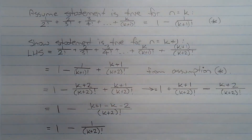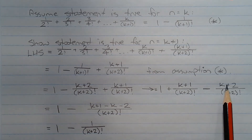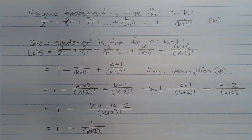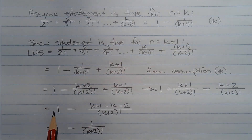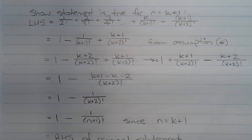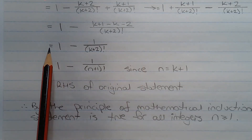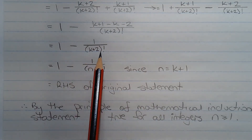Swapping these two terms around, that equals 1 plus k plus 1 over k plus 2 factorial minus k plus 2 over k plus 2 factorial. Adding the numerators together since we have a common denominator, that equals 1 minus k plus 1 minus k plus 2 over k plus 2 factorial. And that equals 1 minus 1 over k plus 2 factorial.